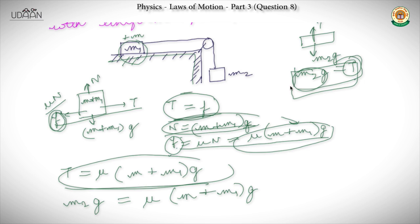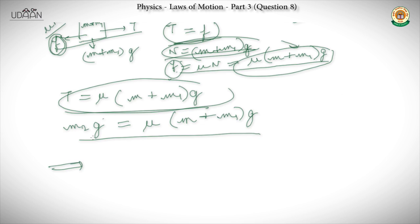We can cancel g from both sides since g is not zero. So we have M2 = μ·(M + M1), which gives M2 = μ·M + μ·M1.